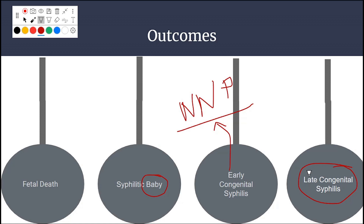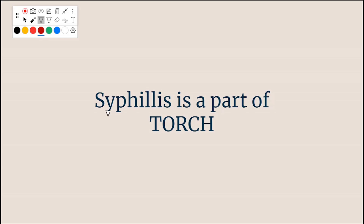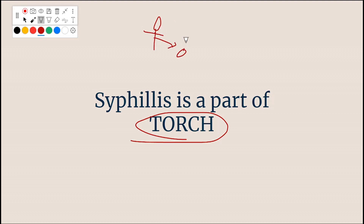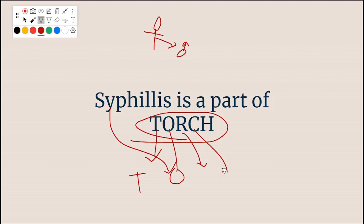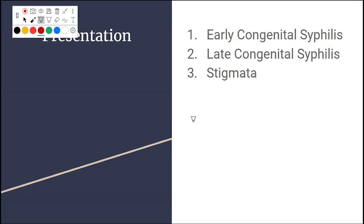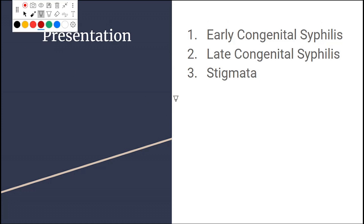Stigmata arise when late congenital syphilis is left untreated. Syphilis is part of TORCH — an acronym for microorganisms that transmit from mother to fetus and cause congenital anomalies: T for Toxoplasma, O for Others (which includes syphilis), R for Rubella, C for Cytomegalovirus, and H for Herpes Simplex Virus.